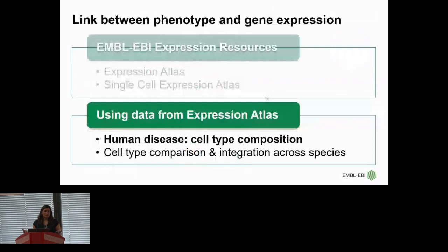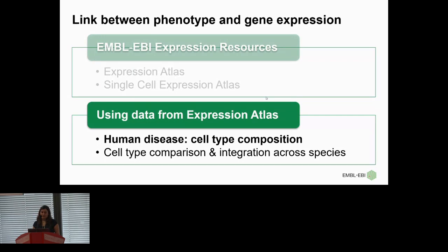That was the first part of my talk covering the services we deliver. Now that I've introduced the resources, I'd like to describe two examples of using and integrating such data further in a standardized format. First, I will present our strategy for deriving cell type composition in bulk disease samples. Second, our efforts in looking at cell type similarities and differences across species. Our distant aim is that results of such analysis will one day be available through the Expression Atlas so all users can benefit.